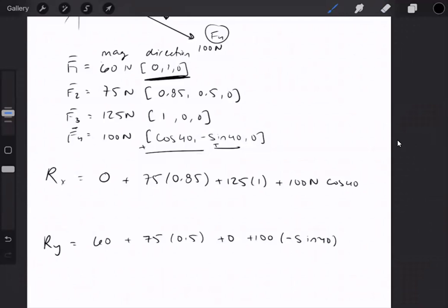We finished here. Rx, if you simplify down this equation, is 266.55 newtons. Ry, when simplified down, is 33.22 newtons.